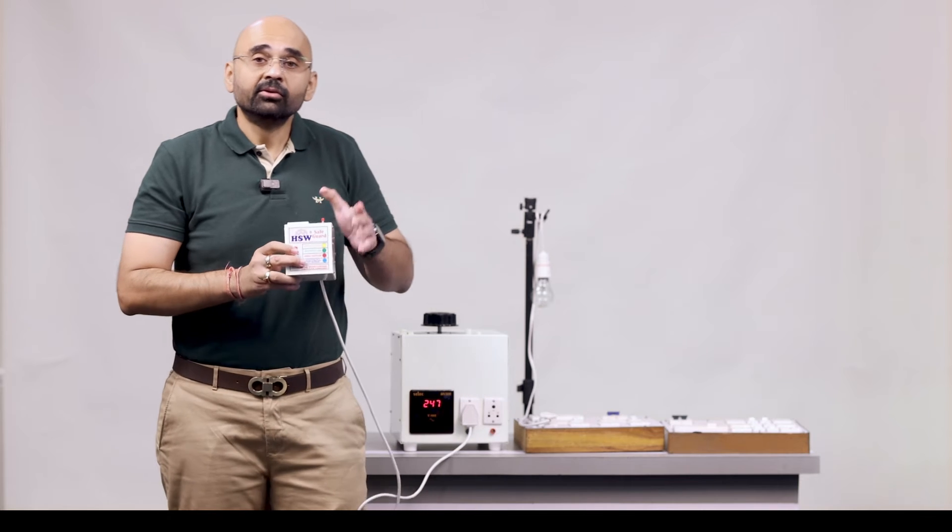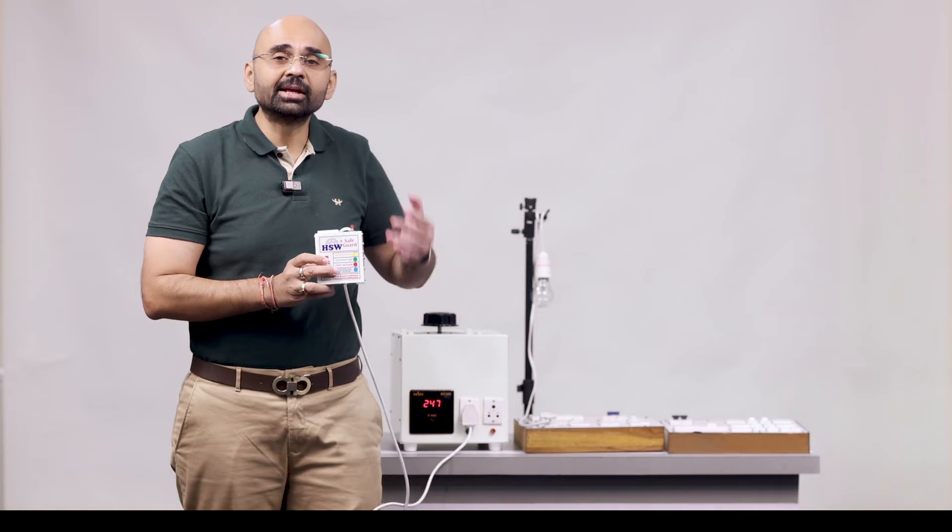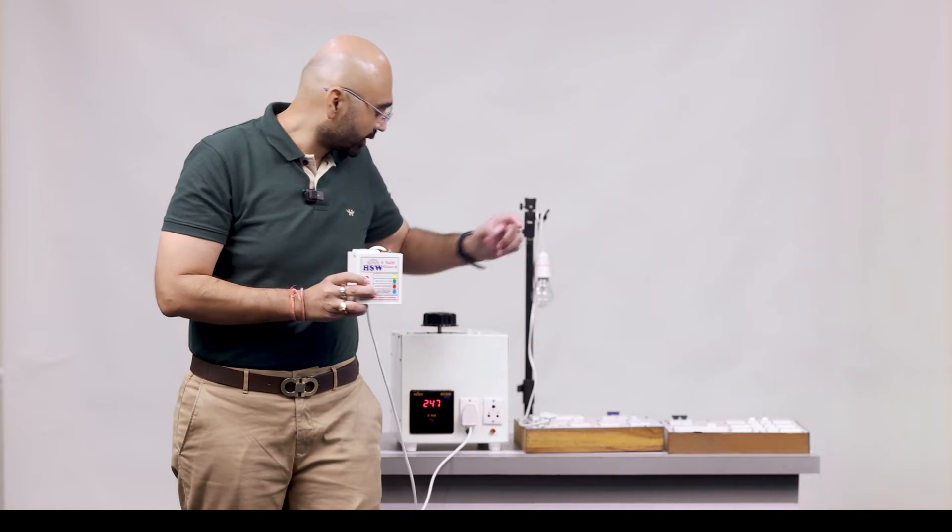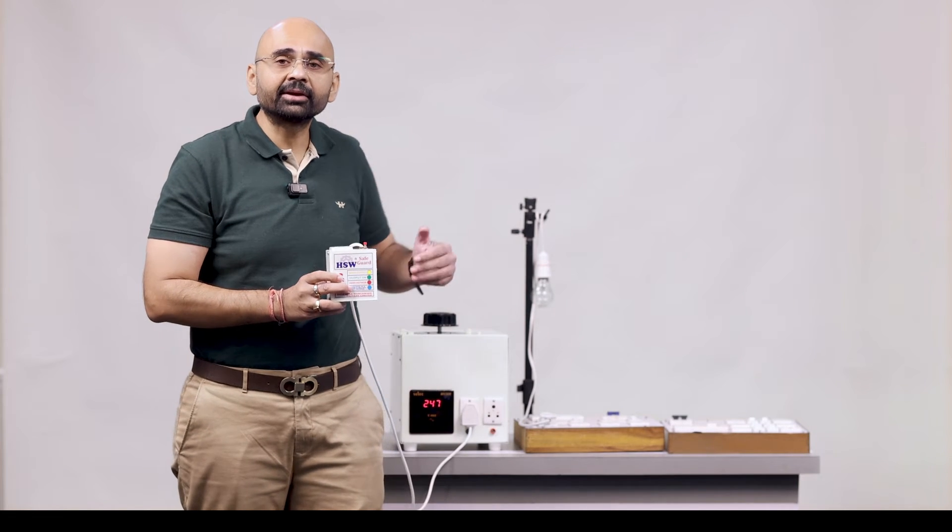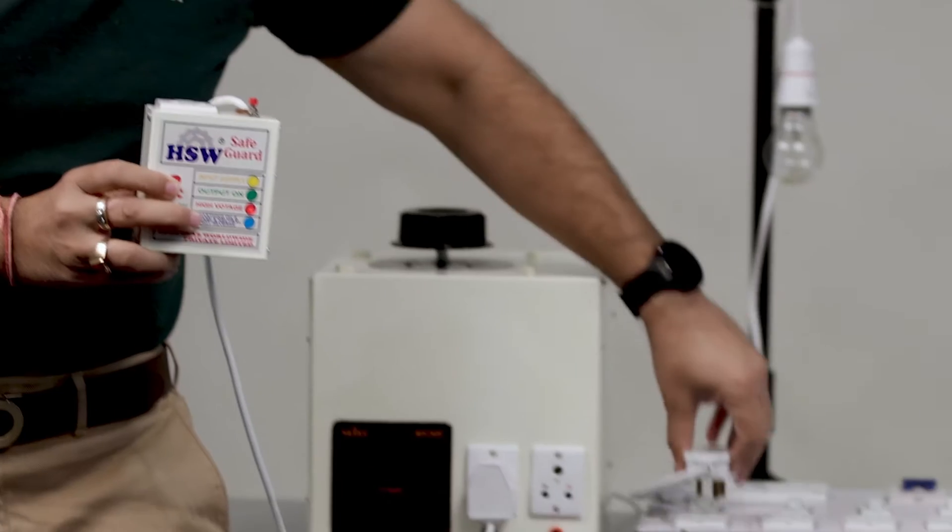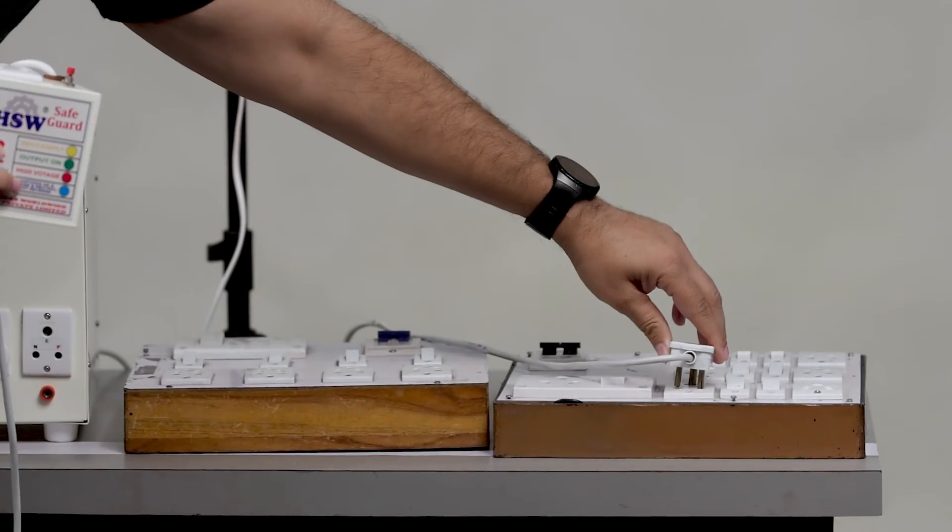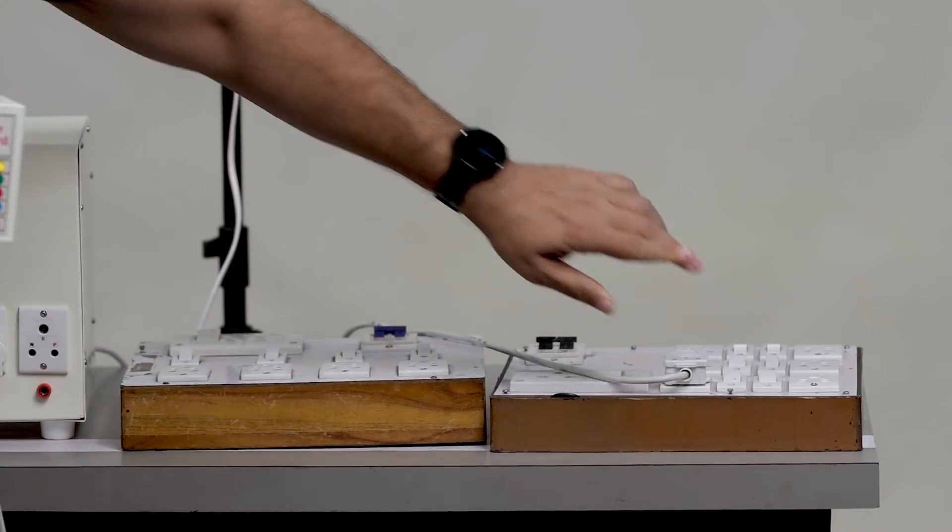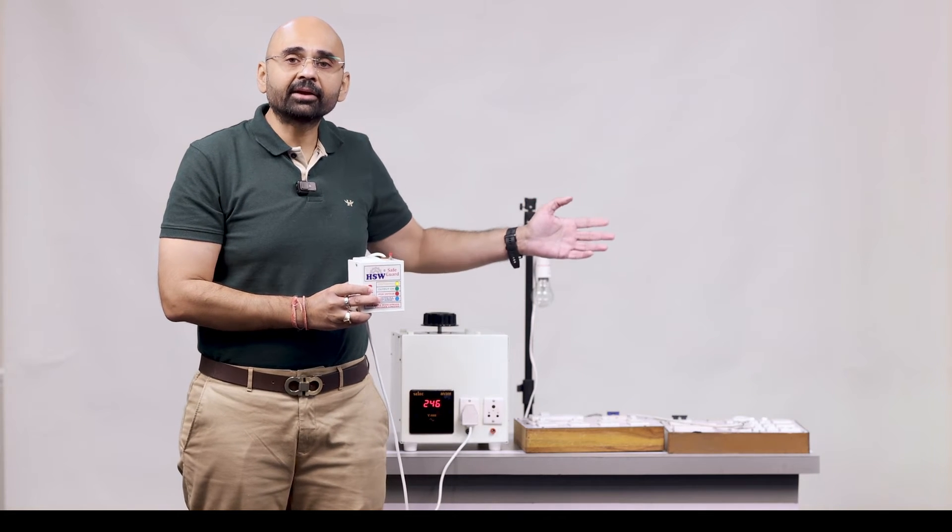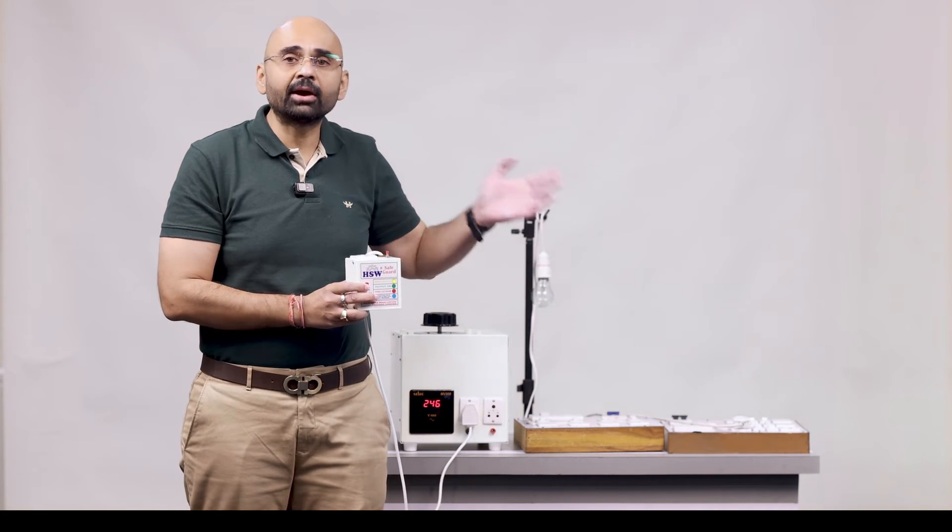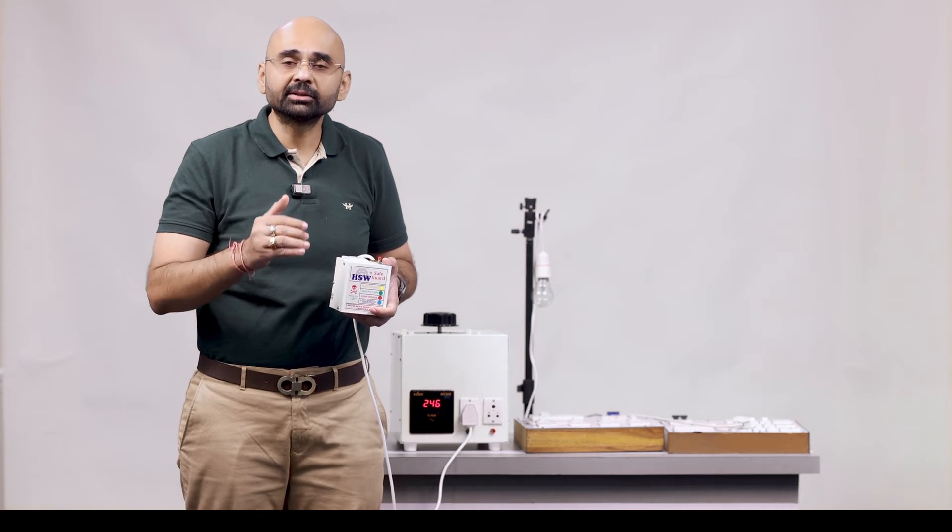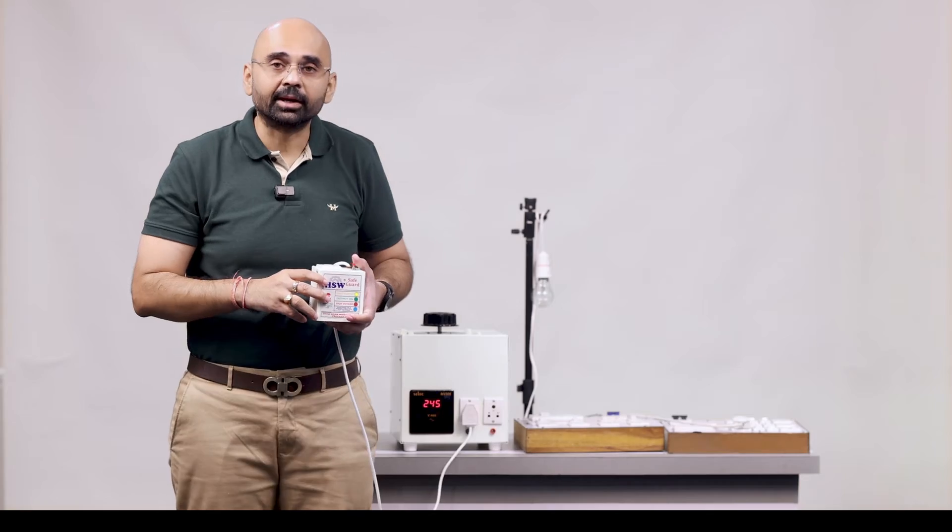Now we change this supply to the board which doesn't have a neutral reverse or earthing proper. So now I will give electric supply to the variac from the another board. See now I have changed the board. The electric board which is over here where we have taken the electricity doesn't have proper earthing reverse or neutral reverse properly.